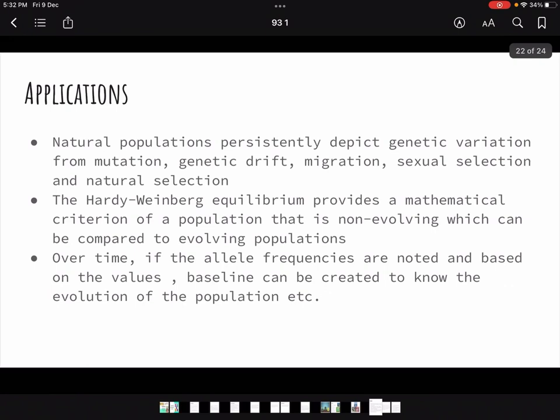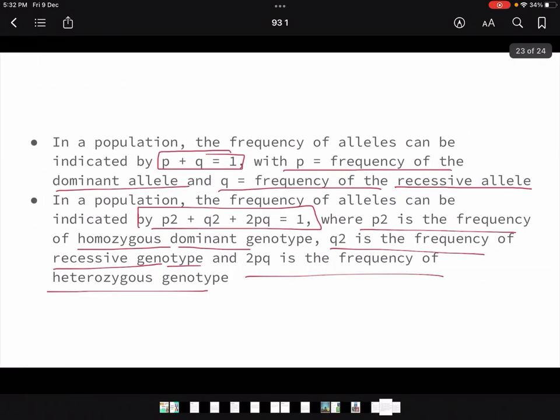Then in a population, if the frequency of alleles is used by this formula, where P² is the frequency of the homozygous dominant genotype, and Q² is the frequency of recessive genotype, and 2PQ is the frequency of heterozygous genotype. Now let us try and understand what he is trying to say. I am taking a hypothetical formula. He has given us two formula. One is P plus Q, which is the allelic frequency.